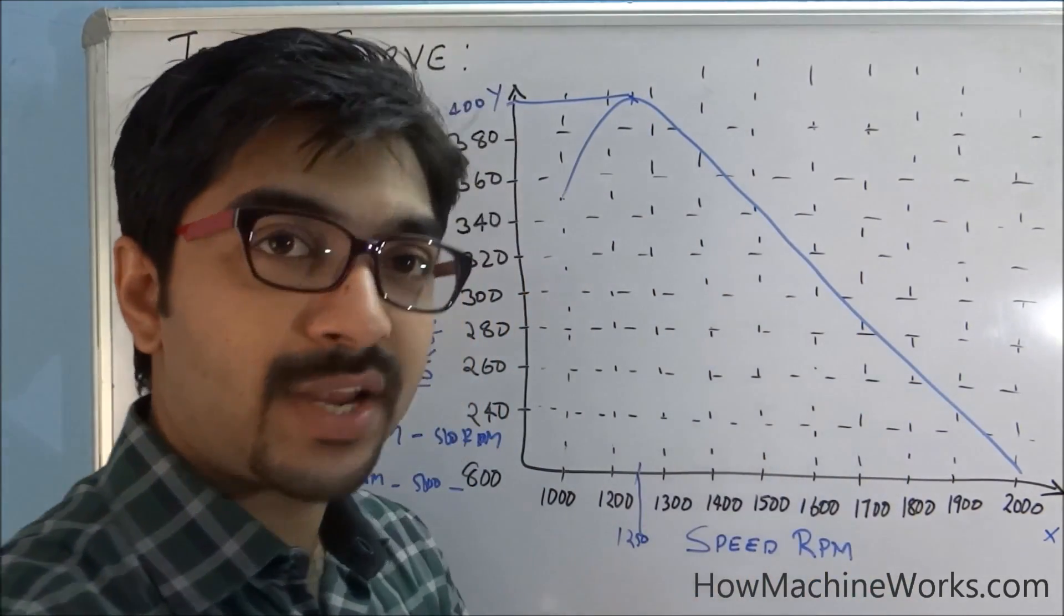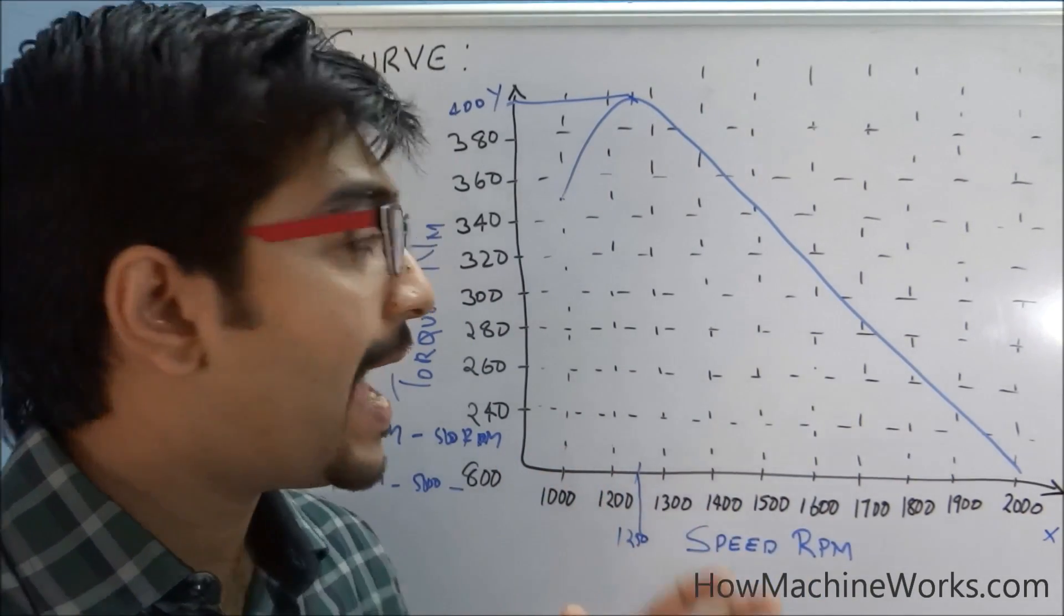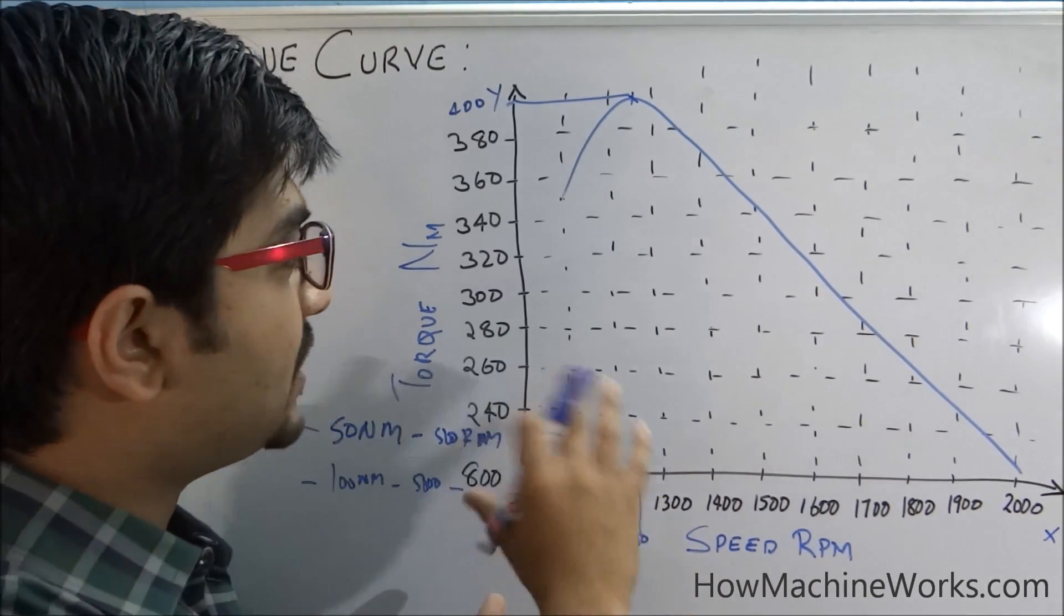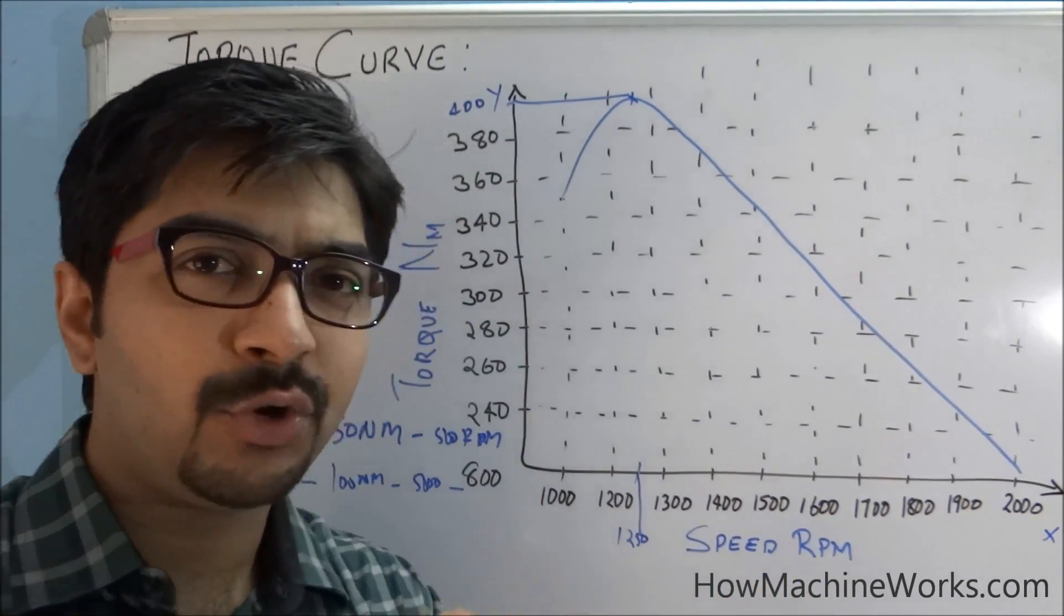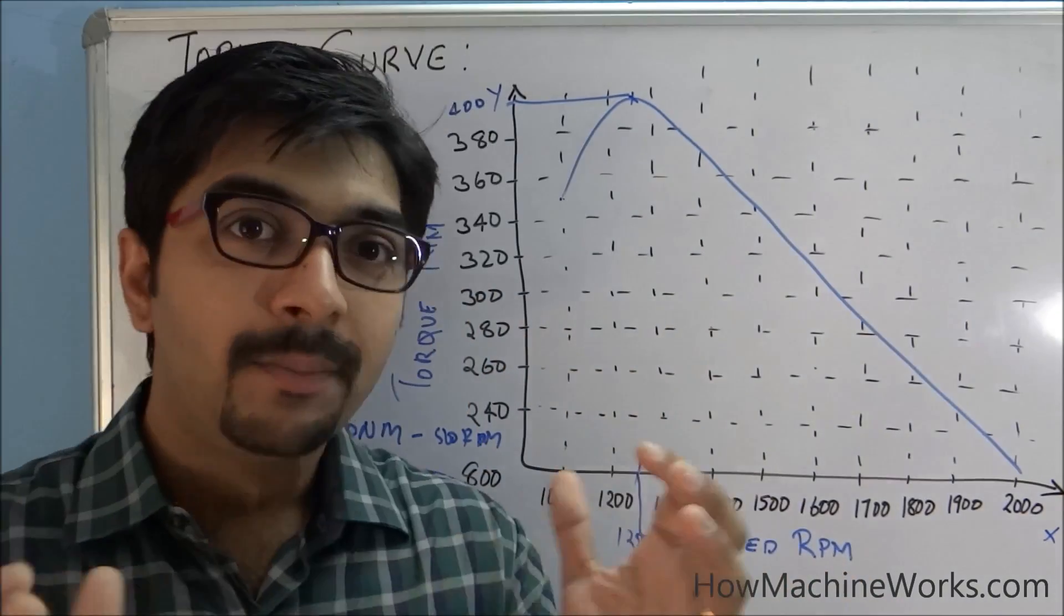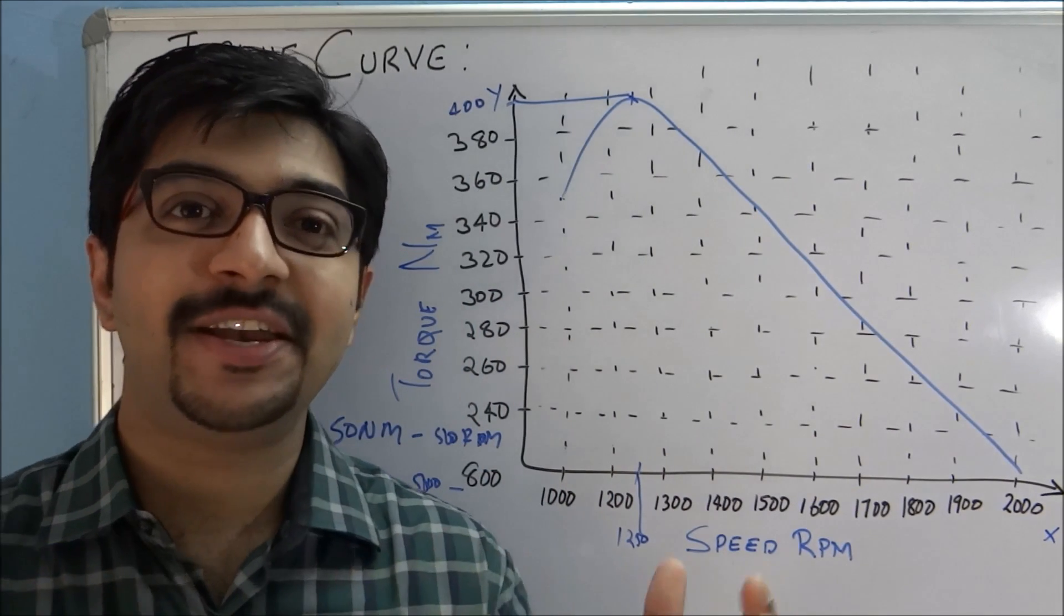So this is something related to the engine, the torque, the gears, and also the fuel consumption. You can relate all these things with this torque and speed curve. I believe you got an idea about the torque curve. Please click the subscribe button for getting more video updates from us. Thanks for watching this video, have a great day.